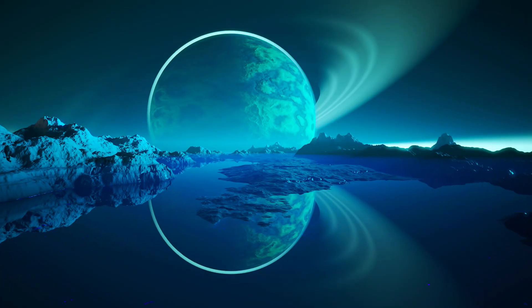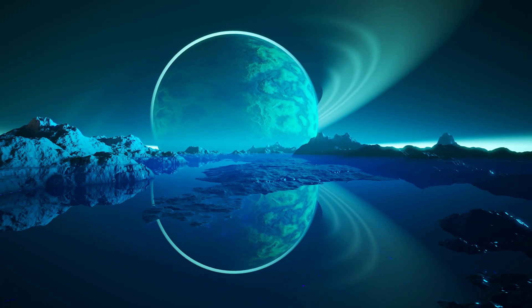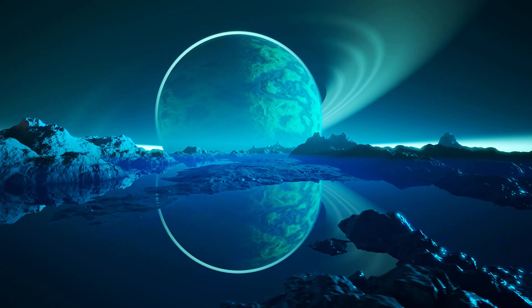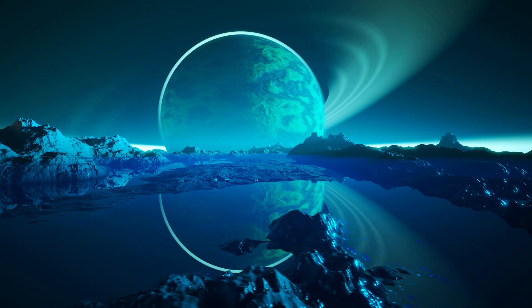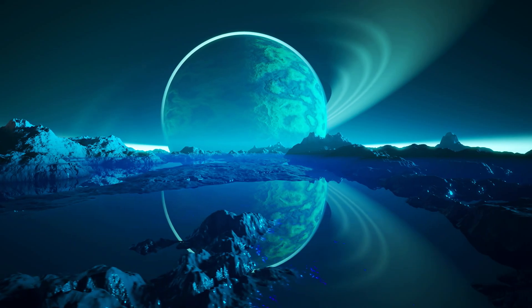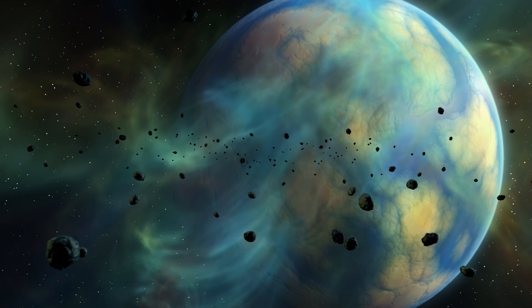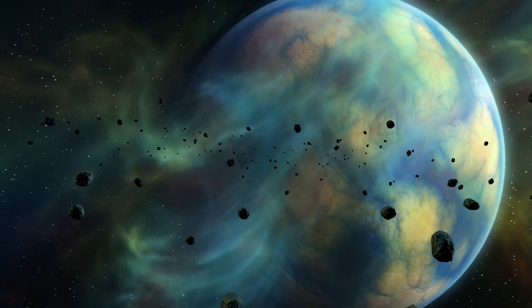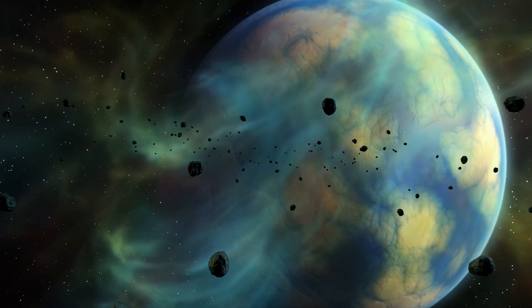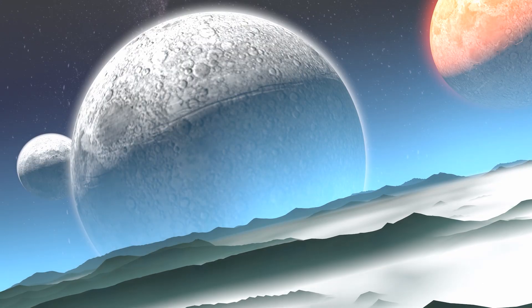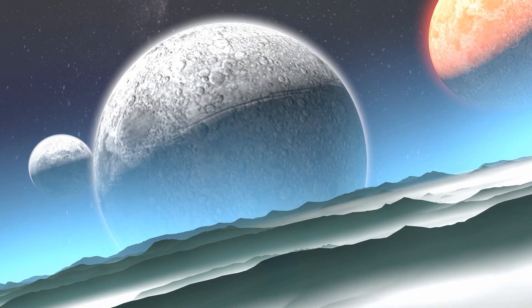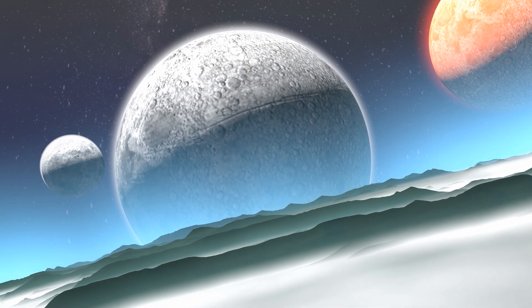At the core of the astronomical community's fascination with Hycean planets is their distinctive set of characteristics, setting them apart from previously categorized exoplanets. Let's delve deep into what really makes these celestial bodies stand out. First and foremost, the name Hycean is derived from two predominant features: hydrogen and oceanic. The combination of these two elements encapsulates the essence of these planets.